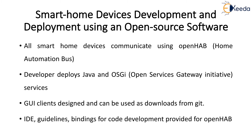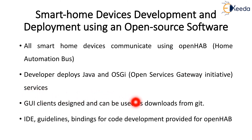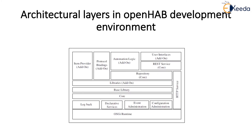Smart home devices development and deployment using open source software: all smart home devices communicate using OpenHAB — the home automation bus. The developer deploys Java and OSGi (Open Service Gateway Initiative) services, graphical user interface clients, and code can be downloaded from GitHub. An IDE — integrated development environment — and guidelines and bindings for code development are also provided for OpenHAB. This is the architecture layers in the OpenHAB development environment, accompanied by the cloud platform my.openhab, which provides communication with the cloud.